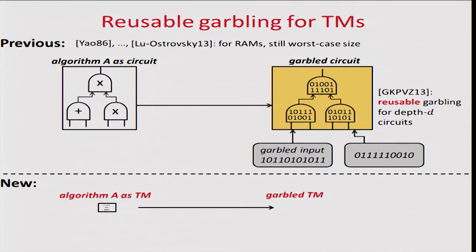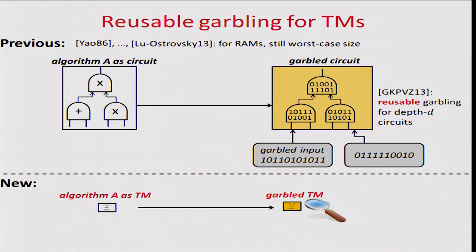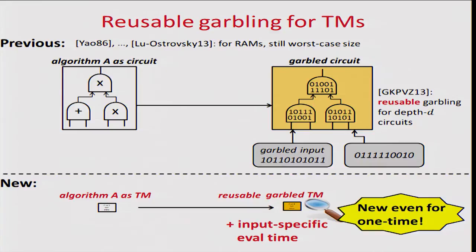Now we can garble algorithms represented as Turing machines. The size of the garbled Turing machine depends only on the description of the Turing machine, which is much smaller than the worst-case running time or the circuit that represents the Turing machine unrolled for the maximum number of steps. The scheme is also reusable, and even for one-time garbling it wasn't previously known how to garble Turing machines. We also provide input-specific evaluation time.